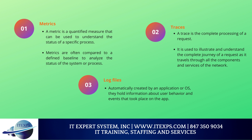Second, traces — a trace is the complete processing of a request. It is used to illustrate and understand the complete journey of a request as it travels through all the components and services of the network. A trace contains hundreds of data points that can indicate errors, diagnose security threats, and detect and isolate network issues. Third, log files — automatically created by an application or OS, they hold information about user behavior and events that took place on the app. Log files are used to perform root cause analysis, understand why a metric changed, and identify where an event began.